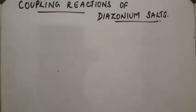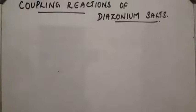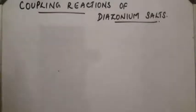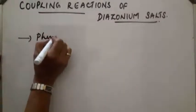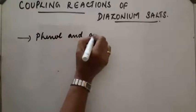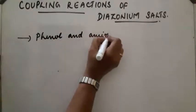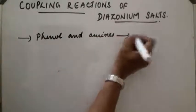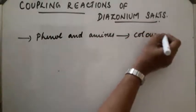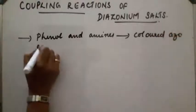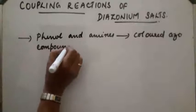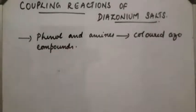The second category of reactions of diazonium salts are coupling reactions. These are reactions in which the diazo group is retained. Diazonium salts readily undergo coupling reactions with electron-rich compounds like phenols and amines, giving coloured azo compounds. Azo dyes are formed. These reactions are called coupling reactions.